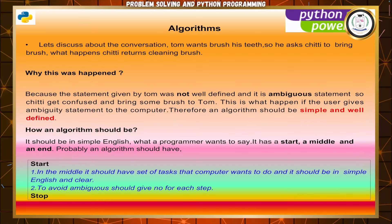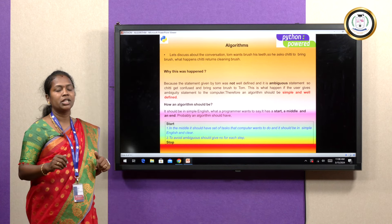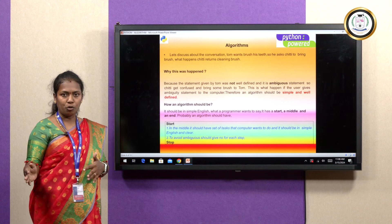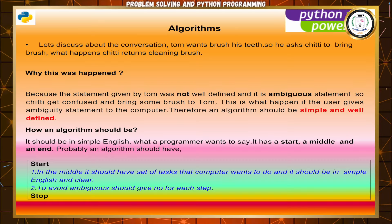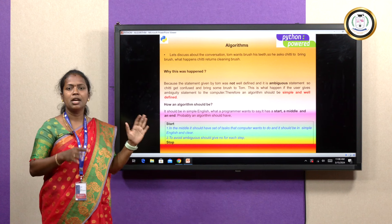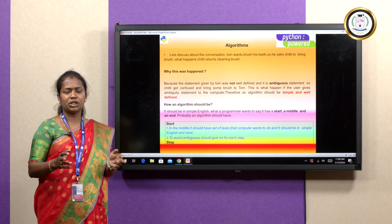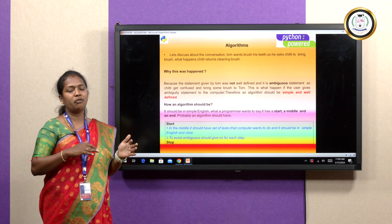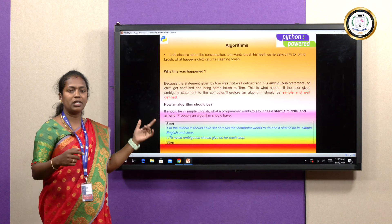Discussing the conversation: the boy asked Chitty to bring a brush. What happened? Chitty returned a cleaning brush. This is the problem. If you give correct instructions properly, it will give the proper output. Why did this happen? Because the statement given was not well-defined. The statement was ambiguous, so Chitty got confused. If you give general instructions, it will bring something else. The common word is applicable to so many objects, so it will confuse the system.